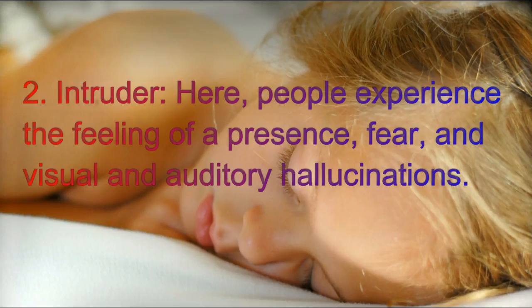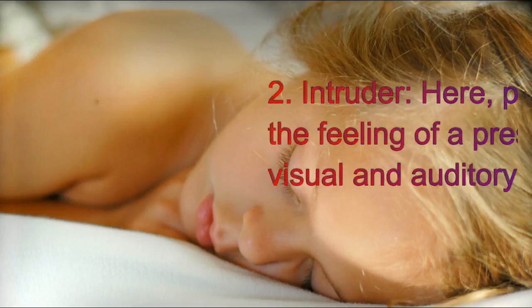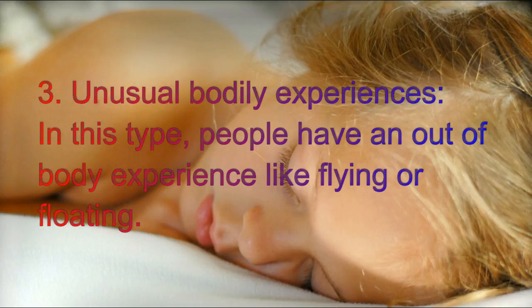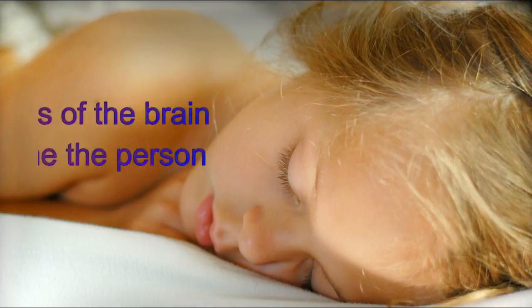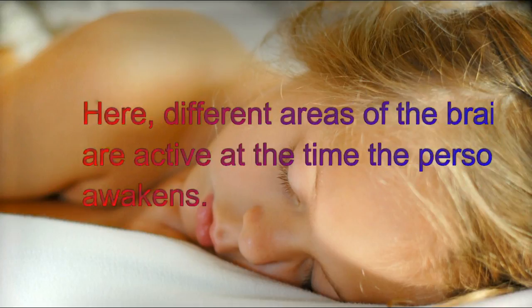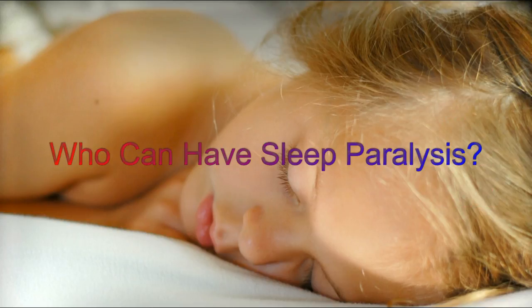Type 2: Intruder. Here, people experience the feeling of a presence, fear, and visual and auditory hallucinations. It is described as a hypervigilant state of the midbrain, where people may be aware of even the smallest stimuli. Type 3: Unusual bodily experiences. In this type, people have an out-of-body experience like flying or floating, as different areas of the brain are active at the time the person awakens.